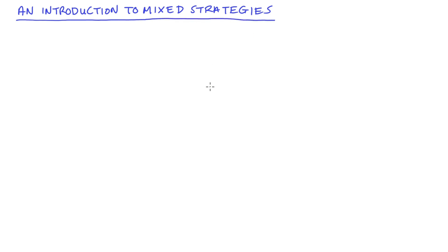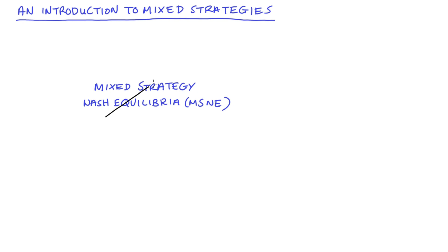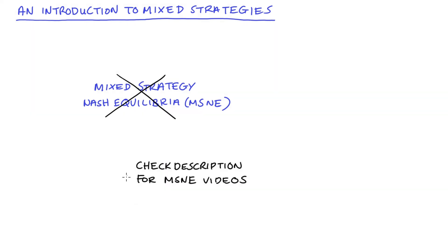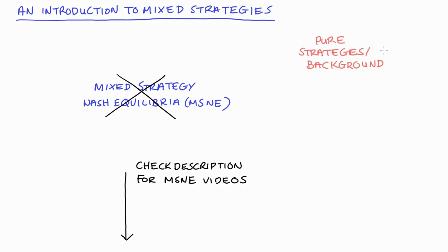Hi everyone! In this video I'm going to introduce mixed strategies in game theory. This video is not going to get into the mixed strategy Nash equilibrium stuff — it's more just setting the scene. I have some videos on mixed strategy Nash equilibria planned, so check the description for links. I also strongly suggest being confident with the more rudimentary theory before attempting mixed strategy stuff, and I'll link to some background videos on the right-hand side and in the description.